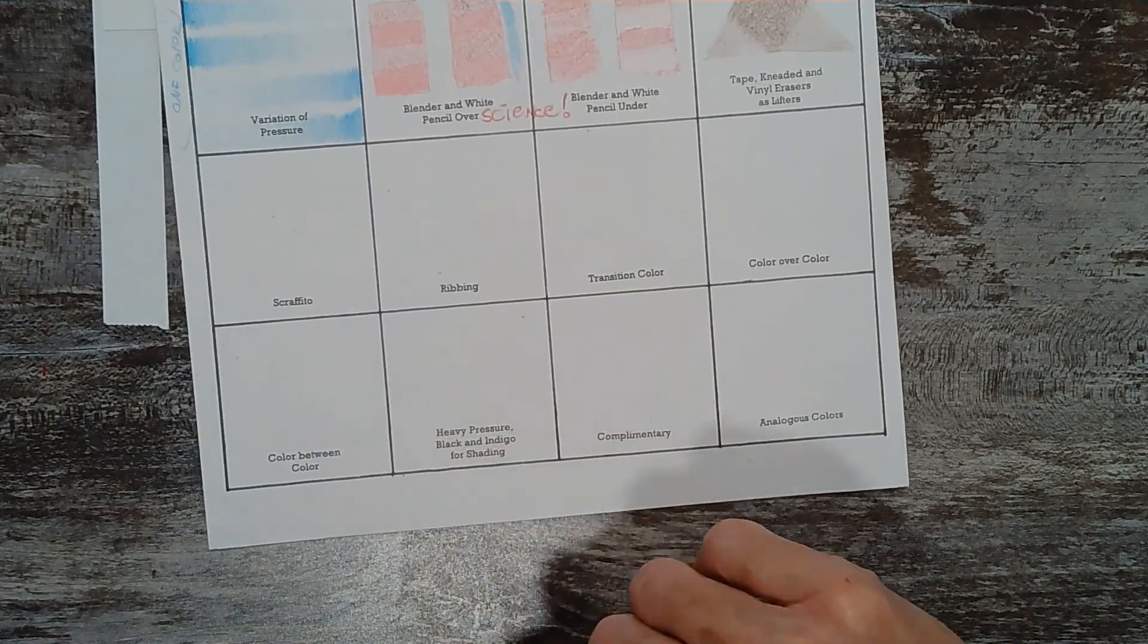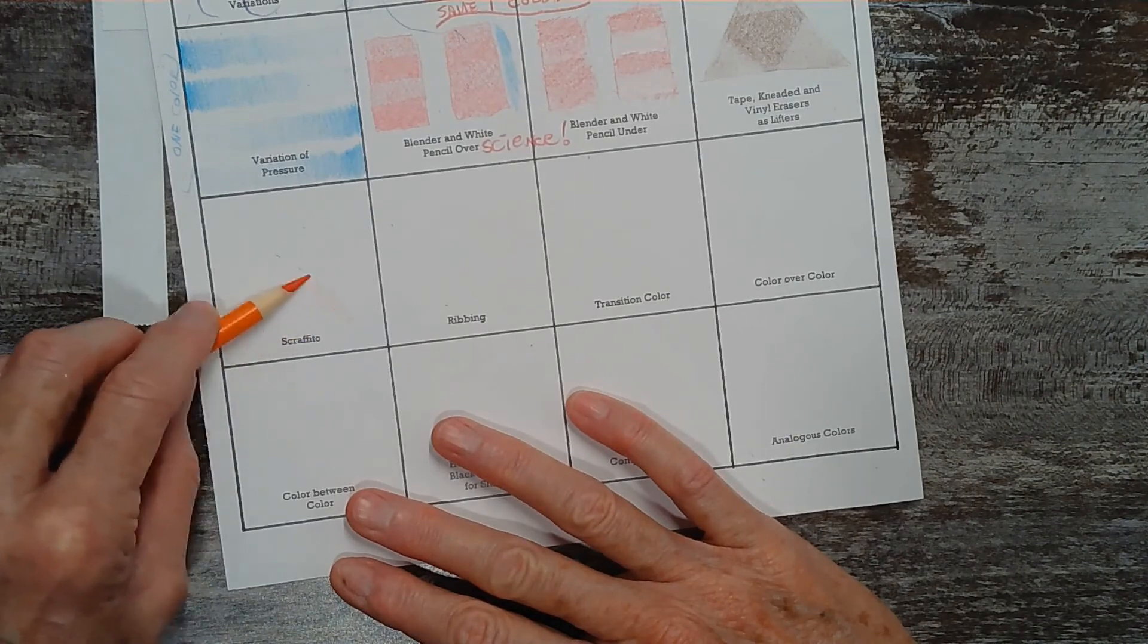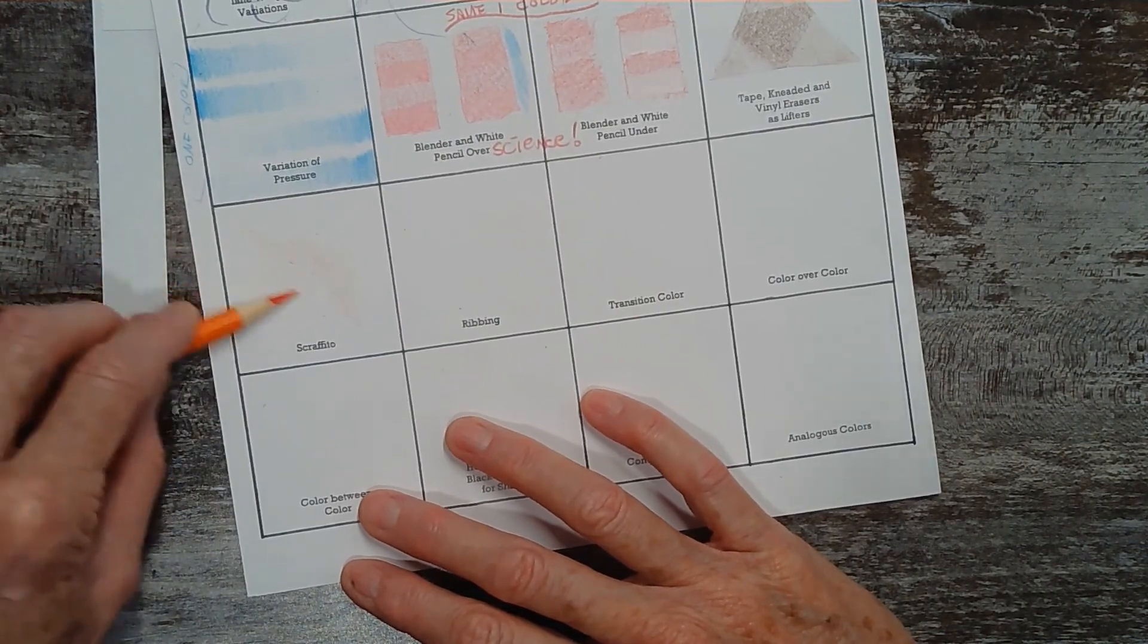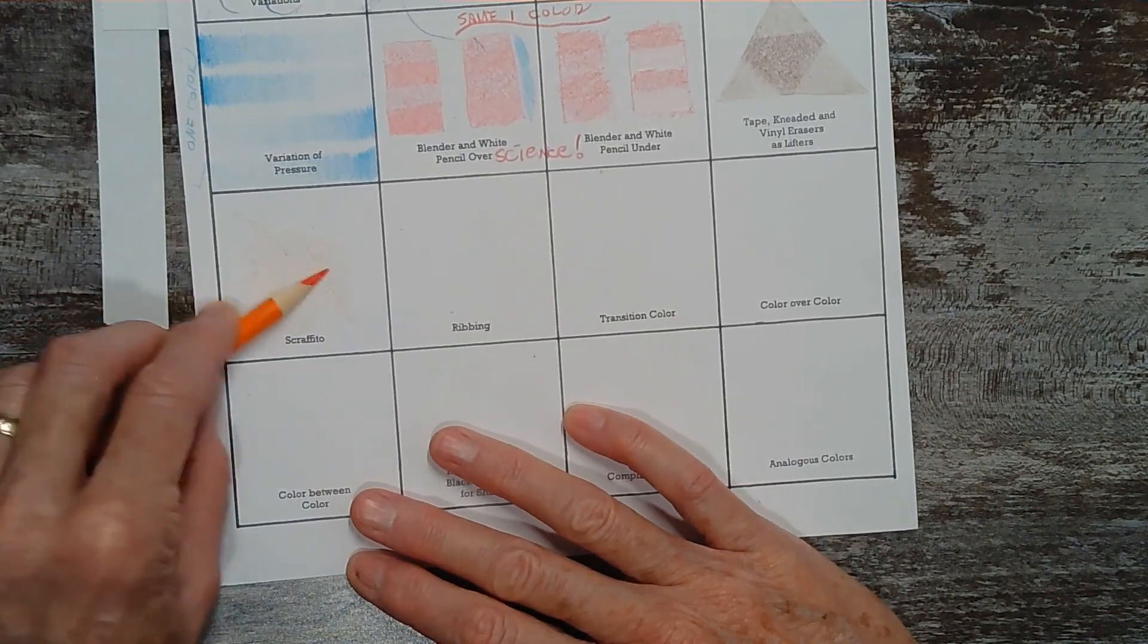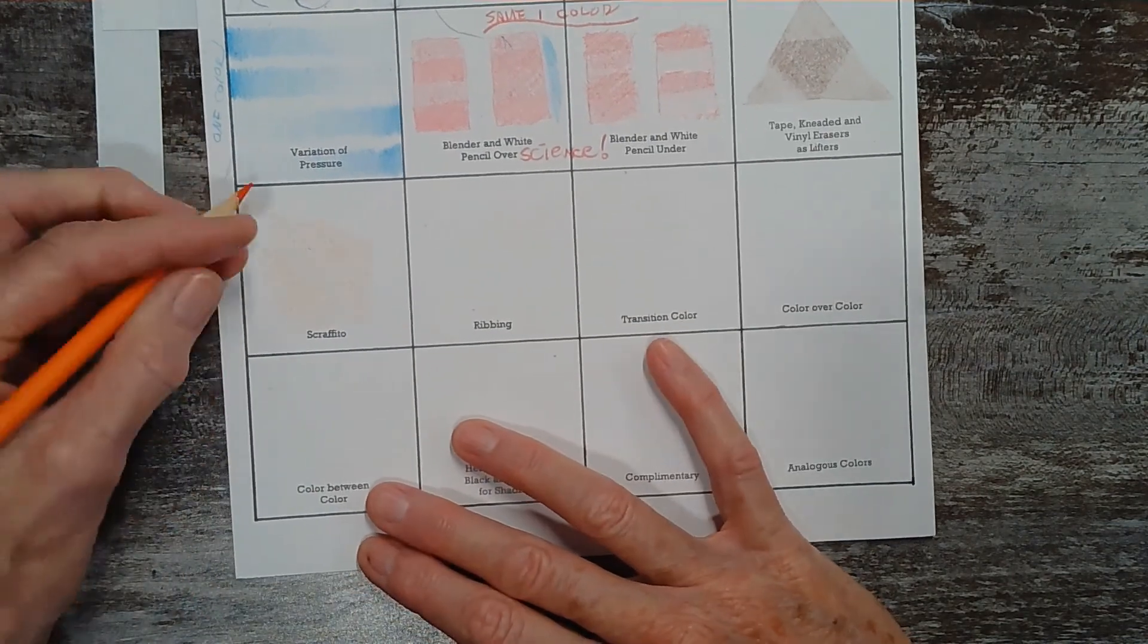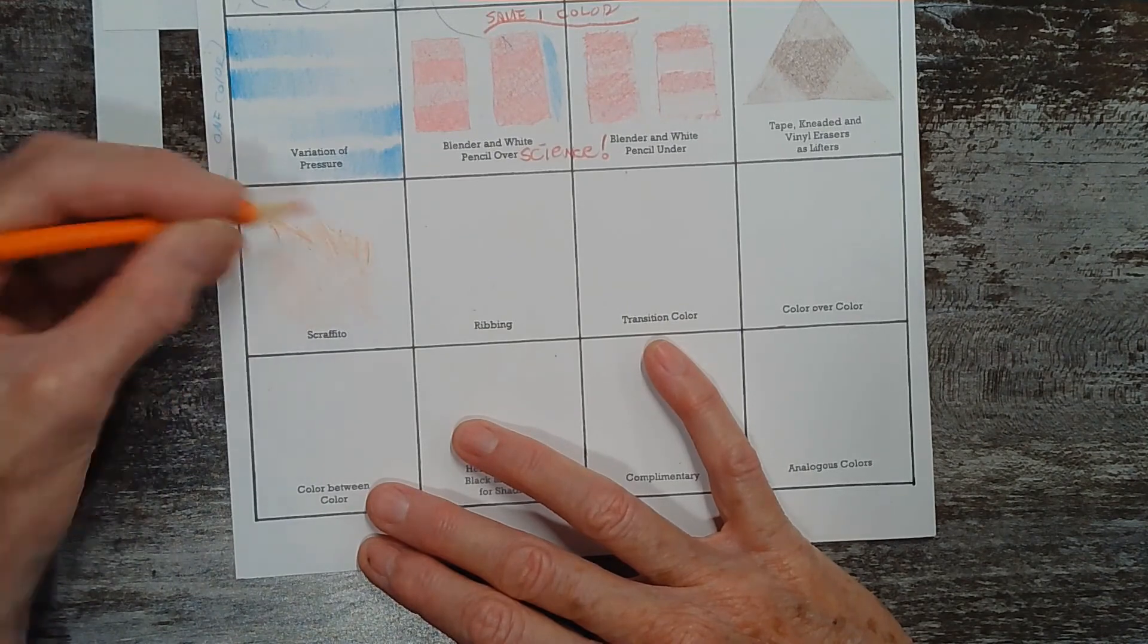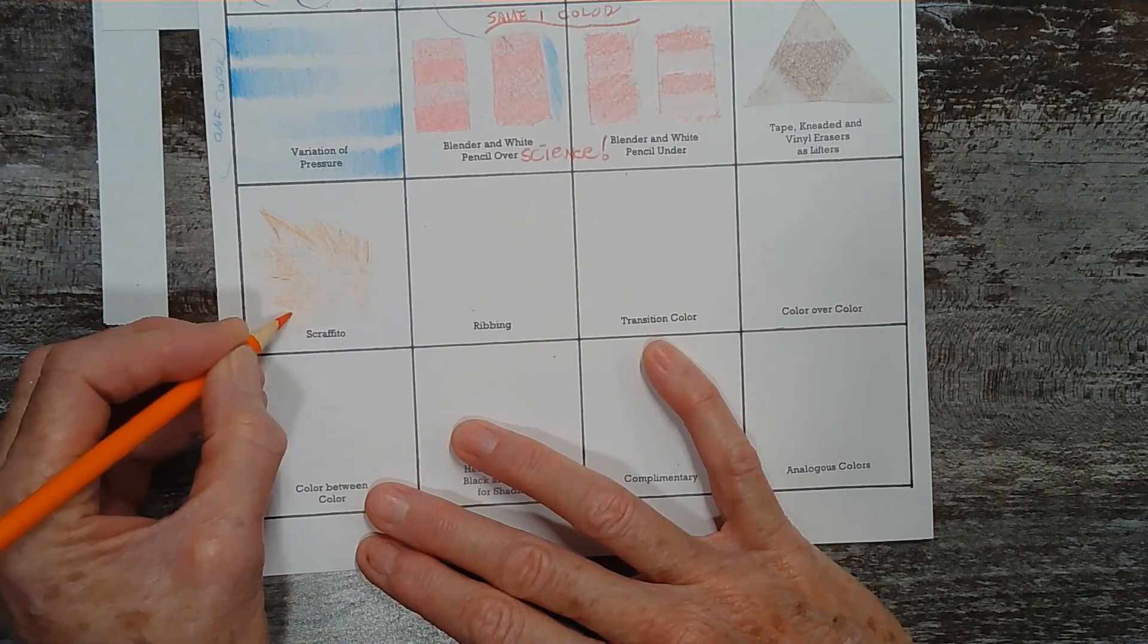If you look down carefully, you can see that you've made dents in your paper where the pen was. And so what's kind of fun is if you start to draw kind of softly with your orange pencil, you'll see that the pencil doesn't attach to the paper where those lines are. You have a white line instead of a dark line. You can see that starting to come out.